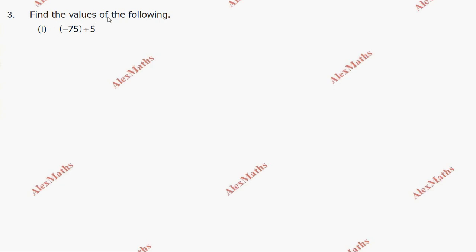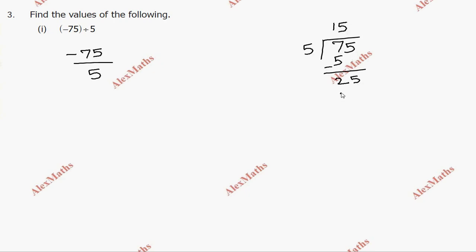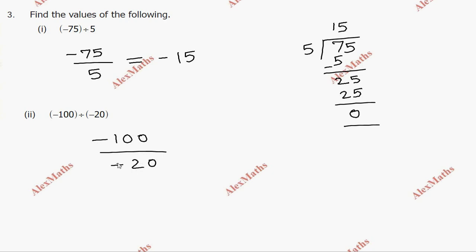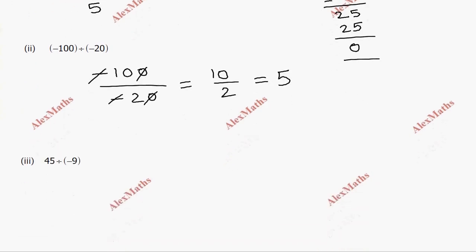Question 3: Find the values. Sub-division 1: minus 75 divided by 5. 5 goes into 75 — 5 times 15 is 75, remainder 0 — so answer is minus 15. Sub-division 2: minus 100 divided by minus 20. The minus signs cancel; 100 divided by 20 gives 5. So the answer is 5.